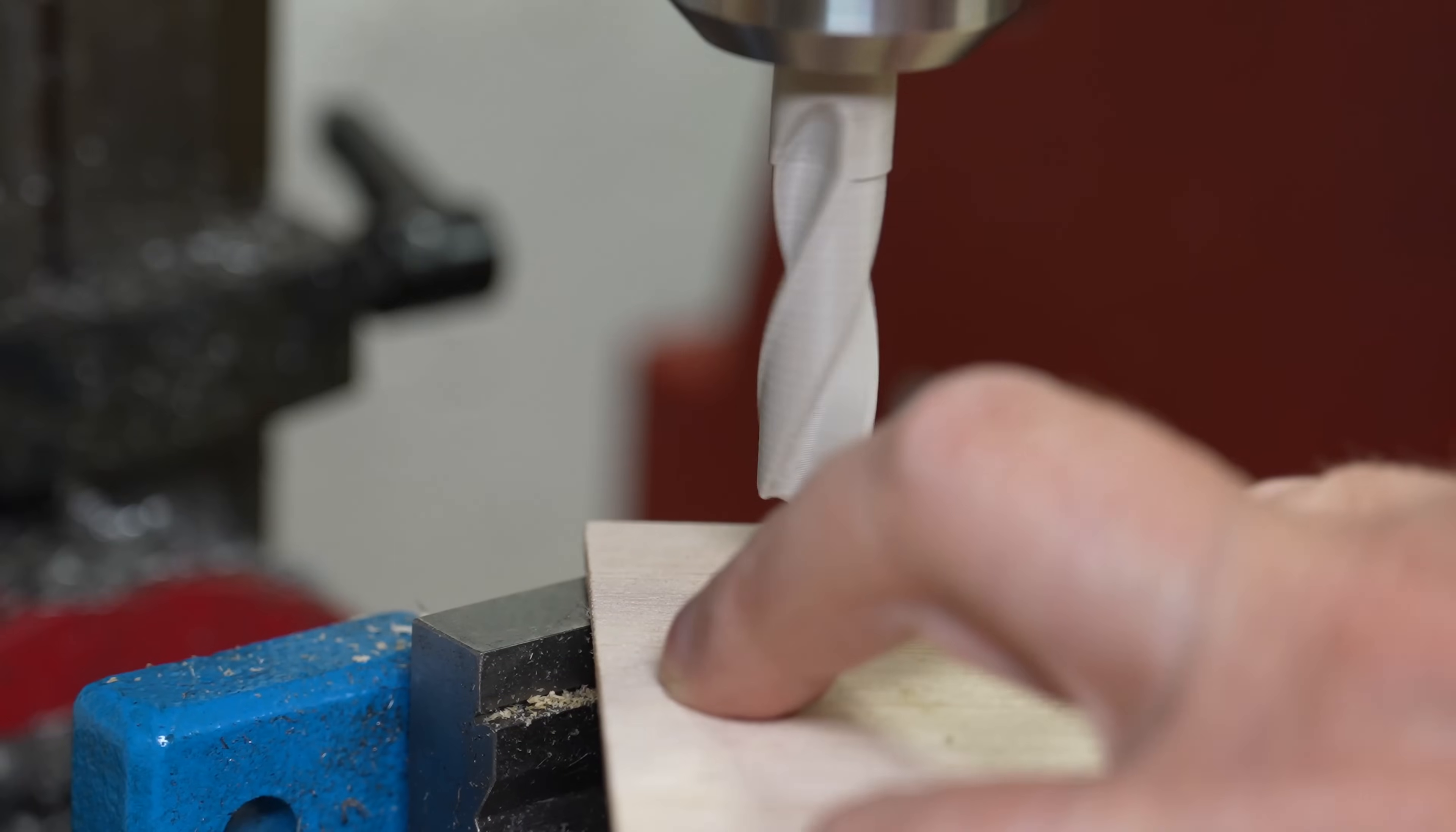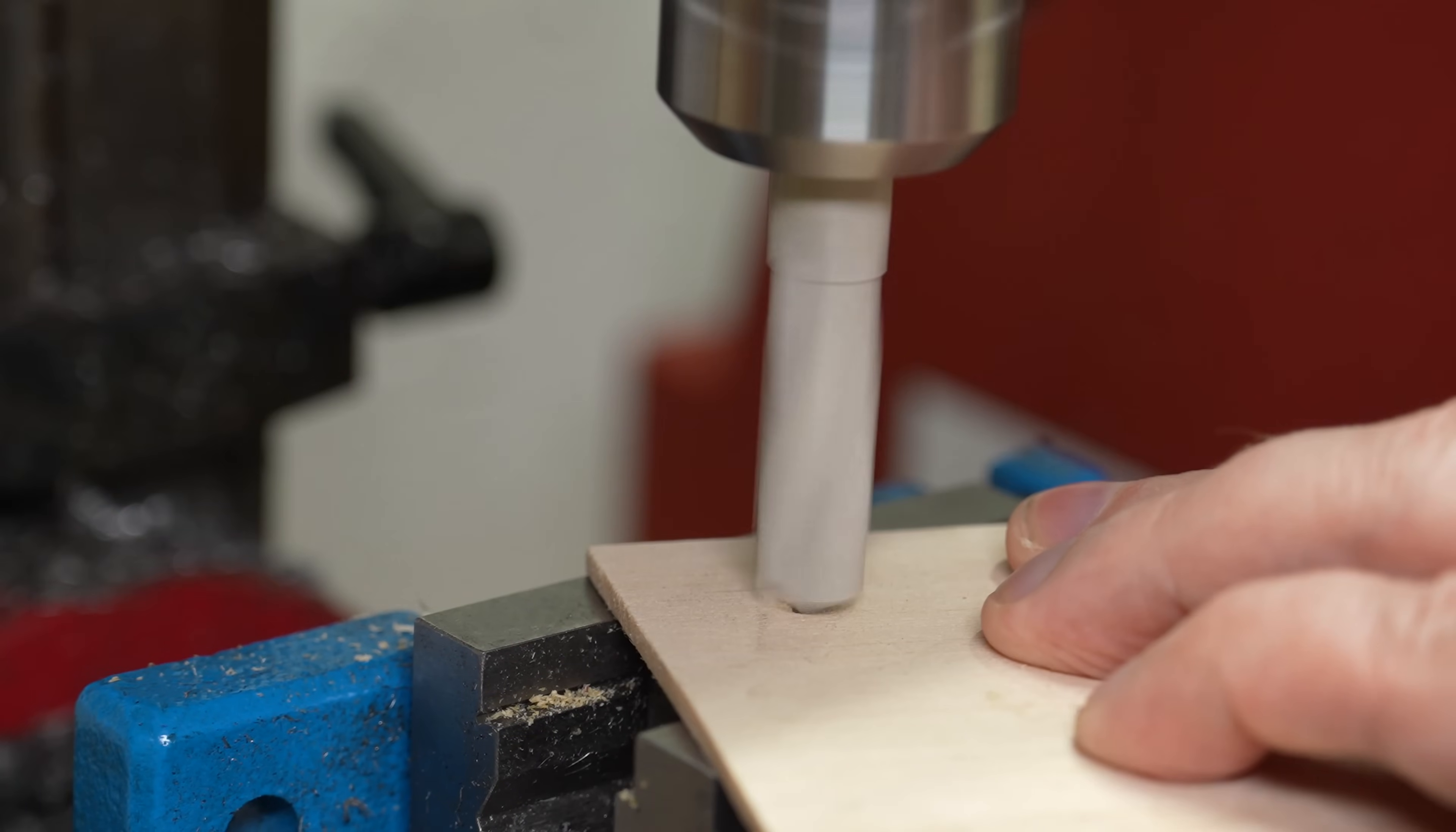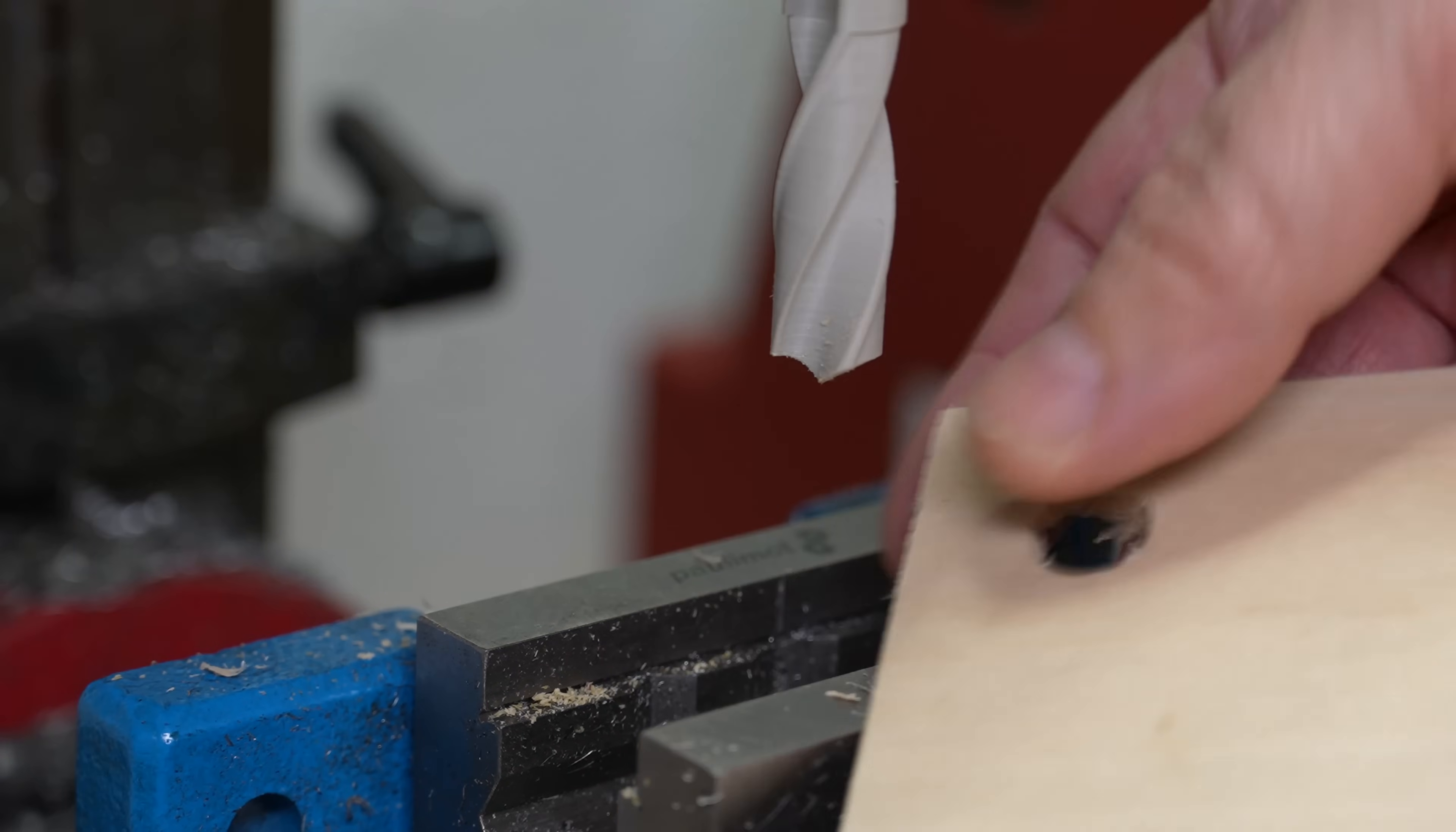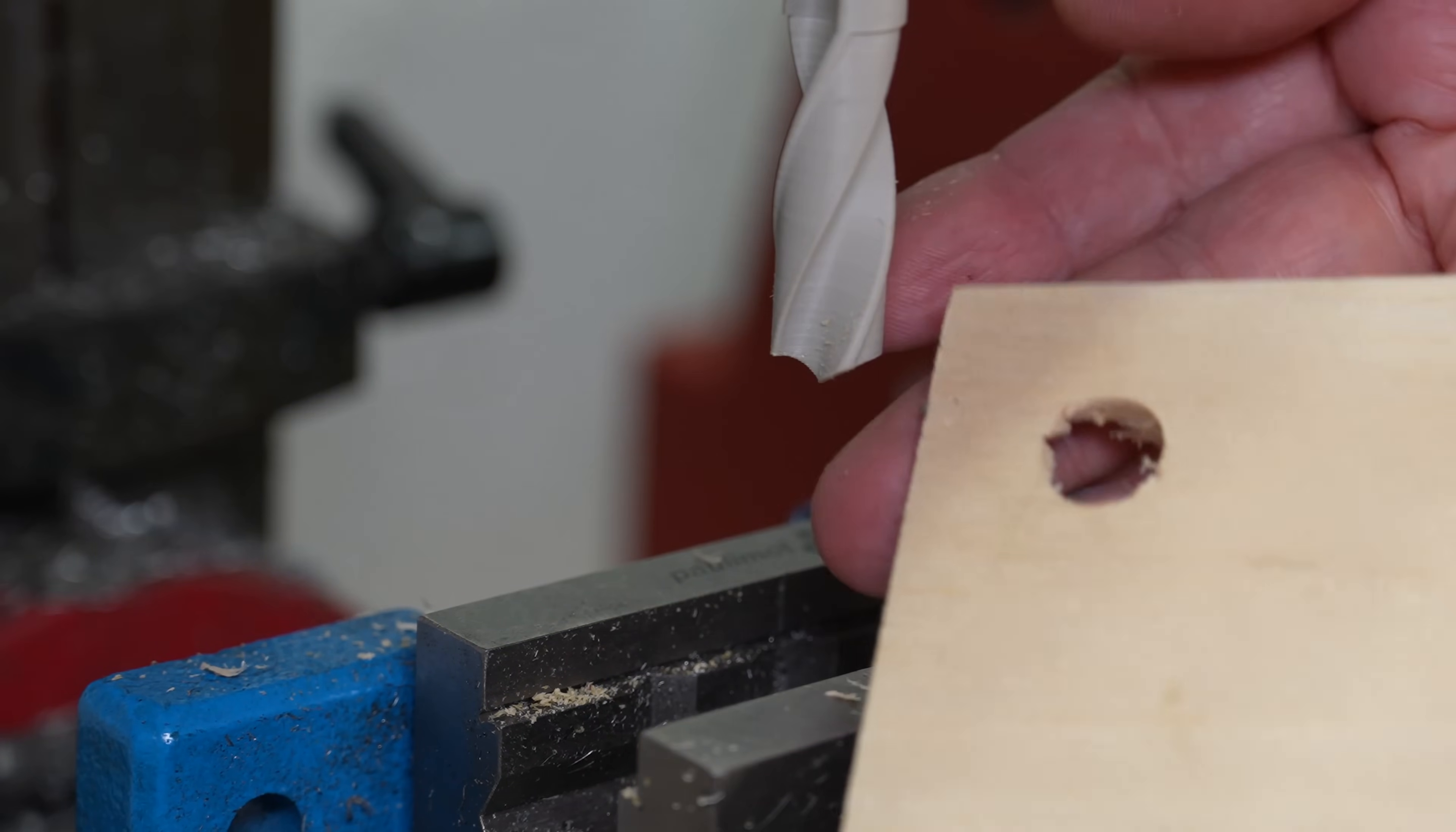But we are not finished yet. Let's try to drill the plywood. I am using the ASA twist drill here. And this was surprisingly easy, very smooth drilling. And no damage on the twist drill.